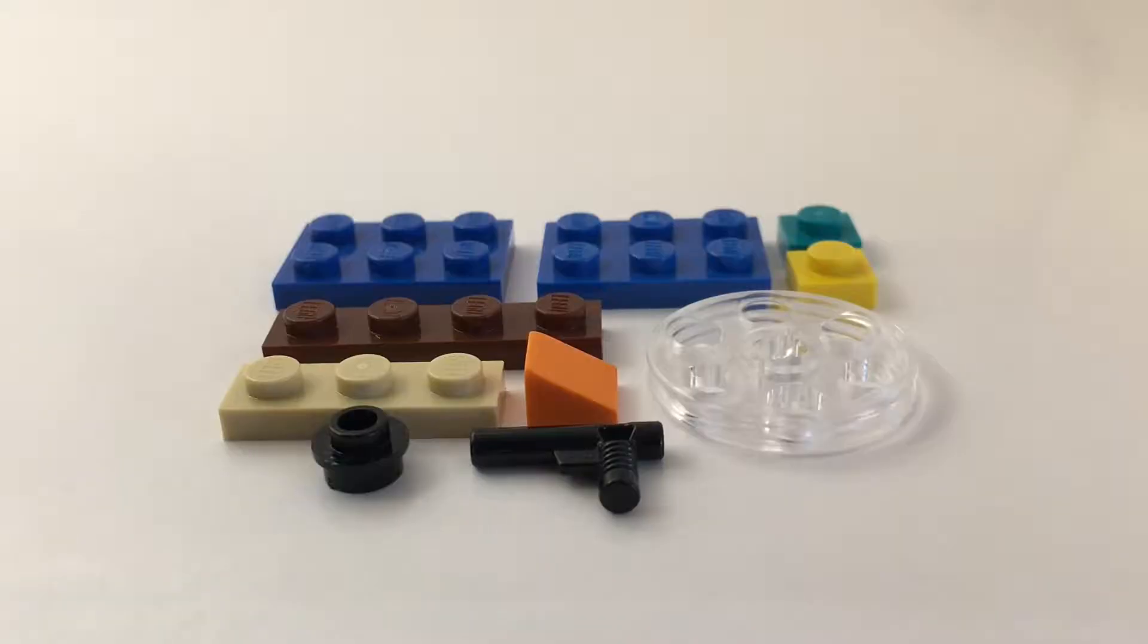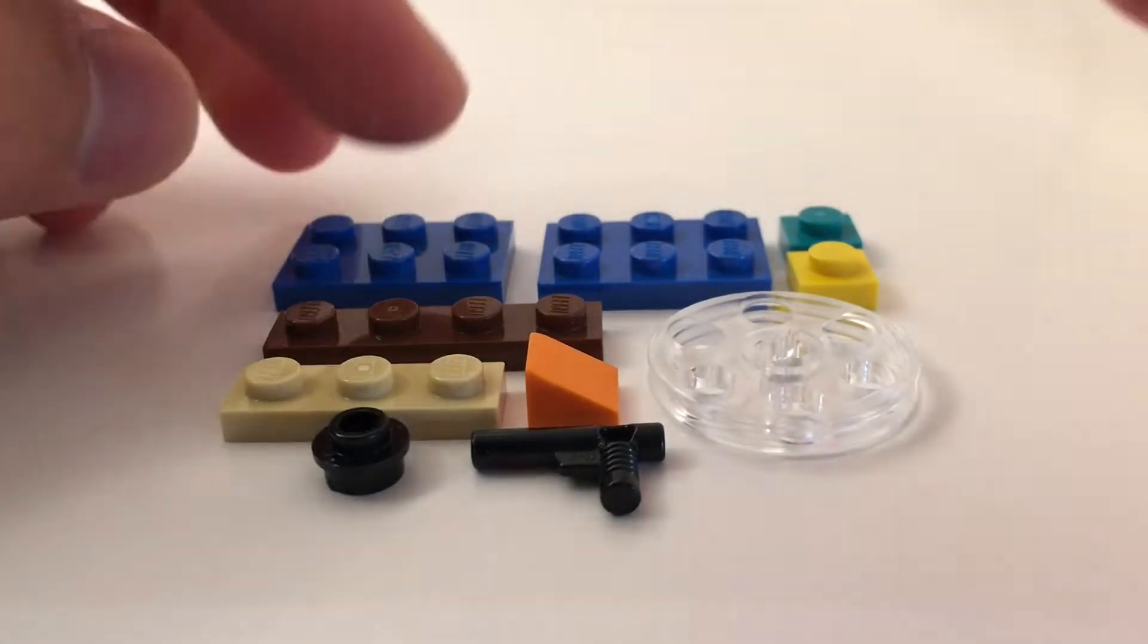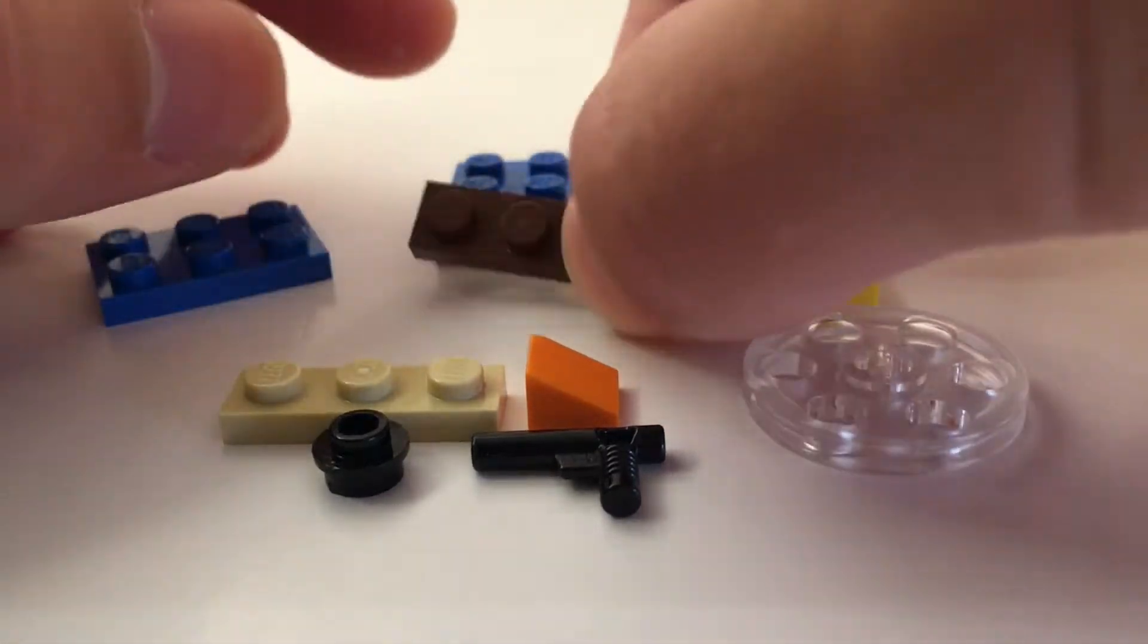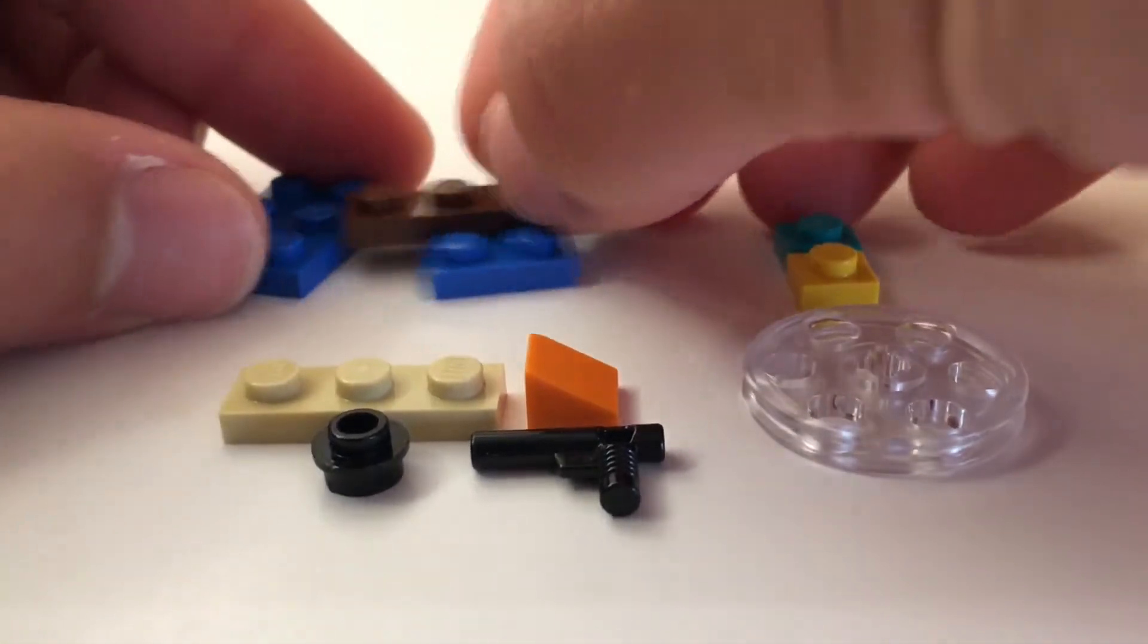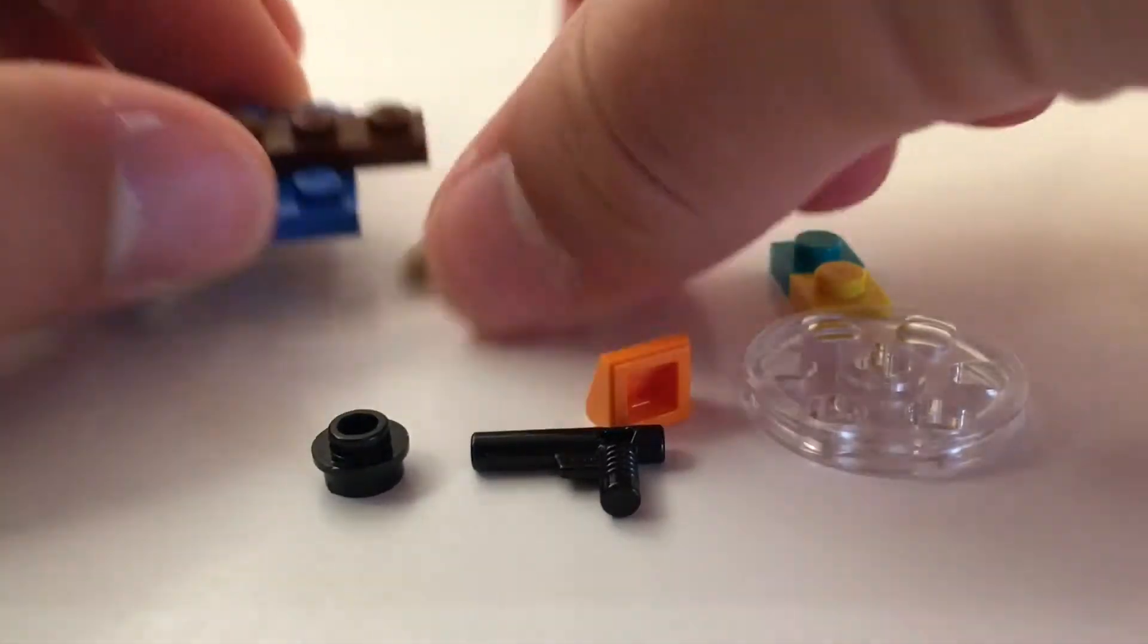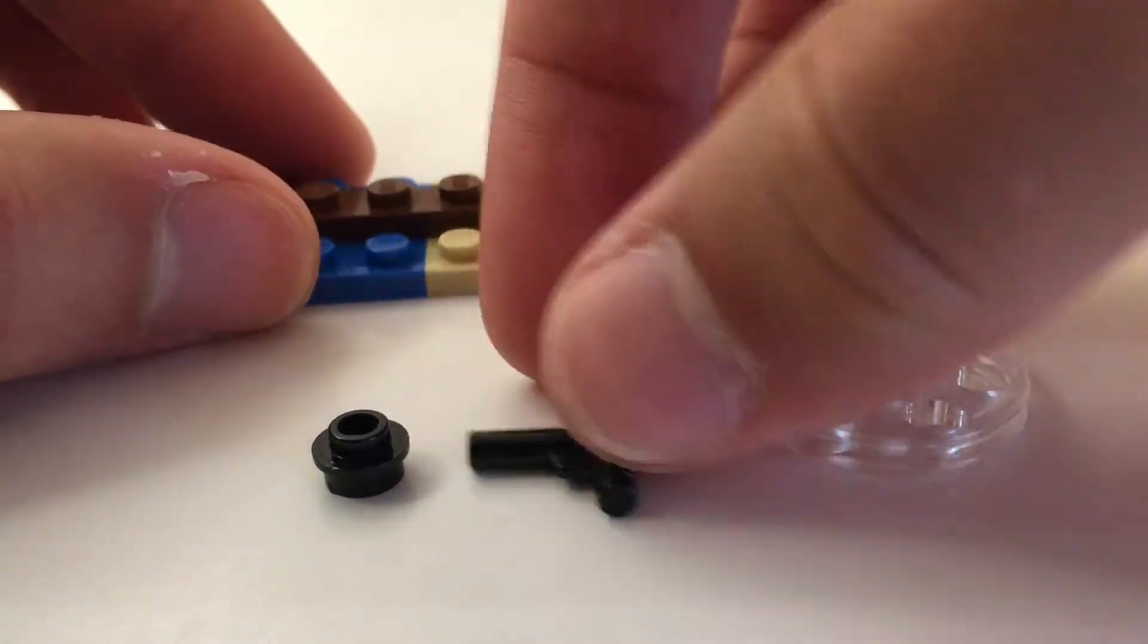All right, so as you can see here, this model does include exactly 10 bricks, and we can really quickly reassemble this. This bottom part is a pretty simple build here, and then we have our buildings.